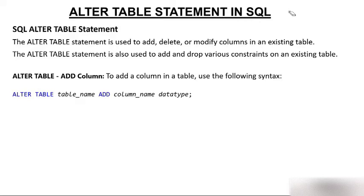To add a column in a table, use the following syntax: ALTER TABLE, then the table name, then ADD, then the column name you want to add, the data type of that column, and you also need to specify the size.